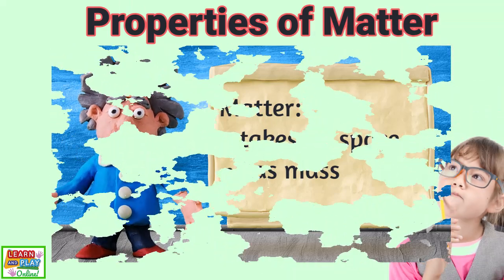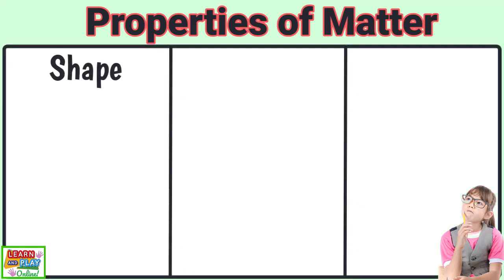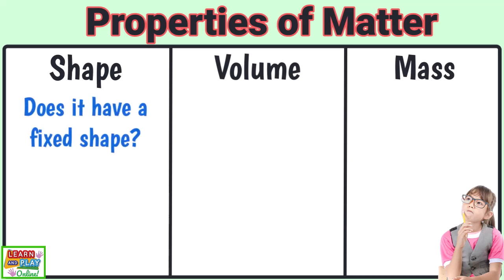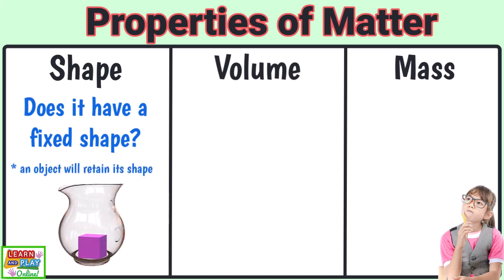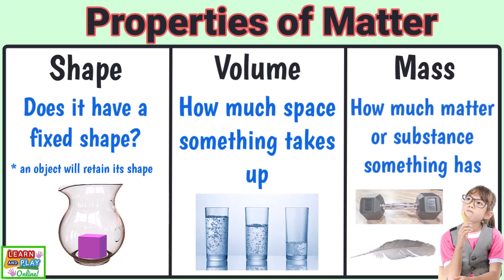When determining the state of matter of something, we can look at three main things: its shape, its volume, and its mass. When examining its shape, we can ask ourselves — does it have a fixed shape? This means that an object will retain its shape and it won't change its shape to fill a container. When examining its volume, we are looking at how much space it may take up. And when looking at its mass, we are examining how much matter or substance something has.